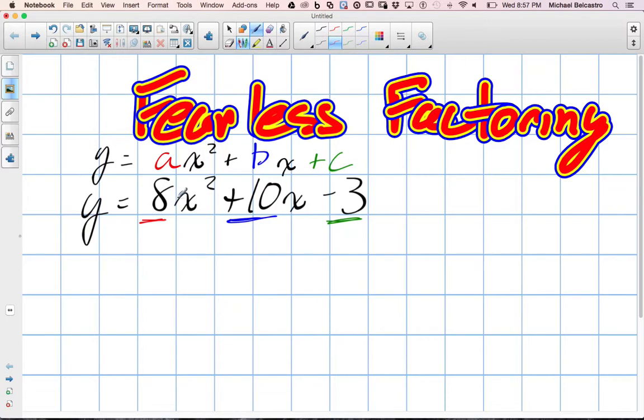Now that we know that, that's really important. What we need to figure out are two numbers that multiply, just like you were talking about before. They multiply to whatever a times c is. And those same two values need to add up to whatever the b value is.